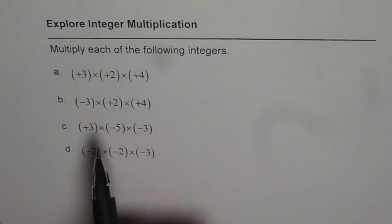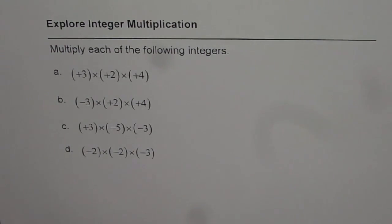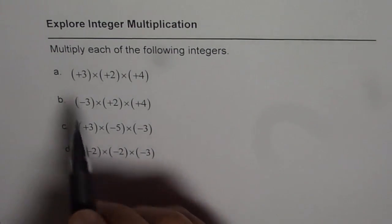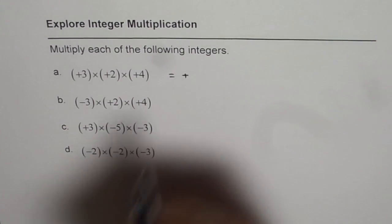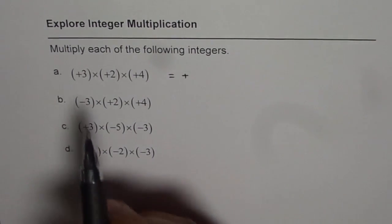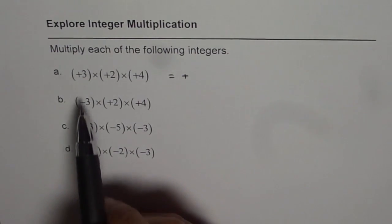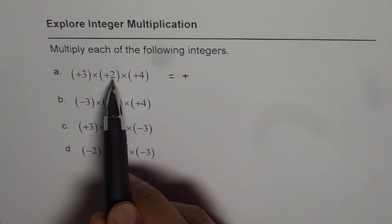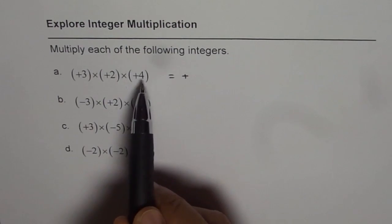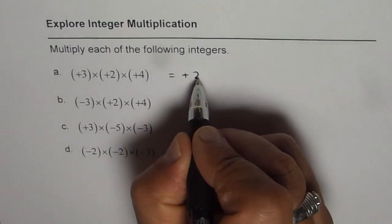When you multiply positive numbers, you always get a positive number. So we get a positive number. That is the sign of the integer, and let us multiply the numbers now. Three times two is six, and six times four is twenty-four. Therefore the result is twenty-four.